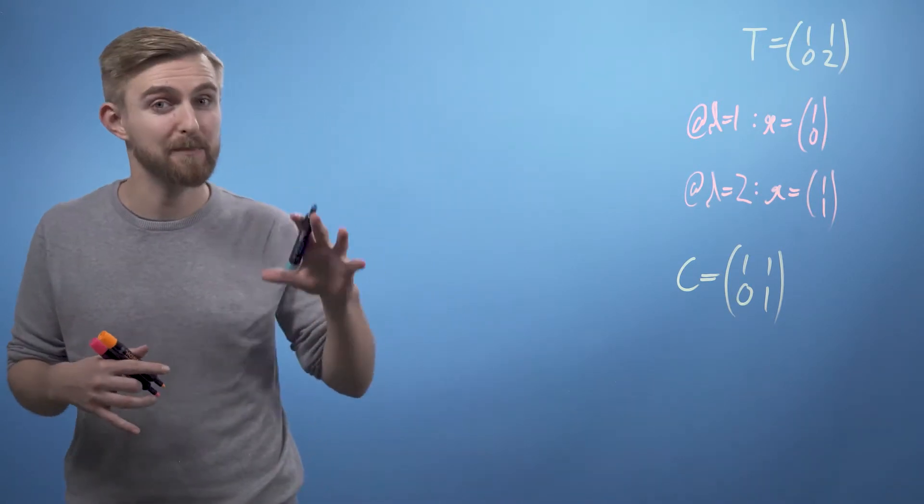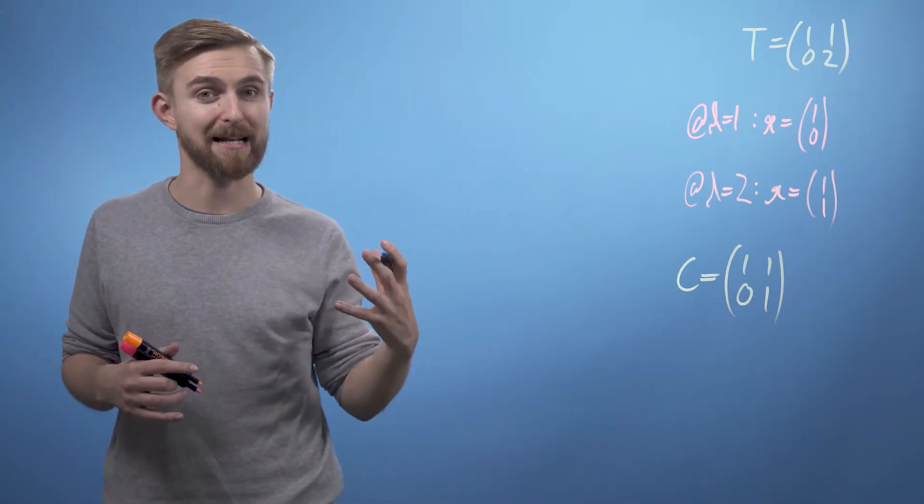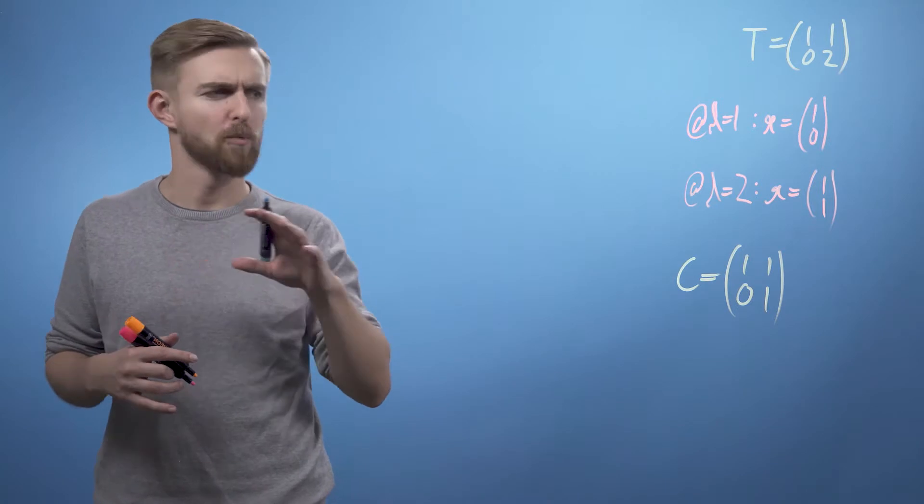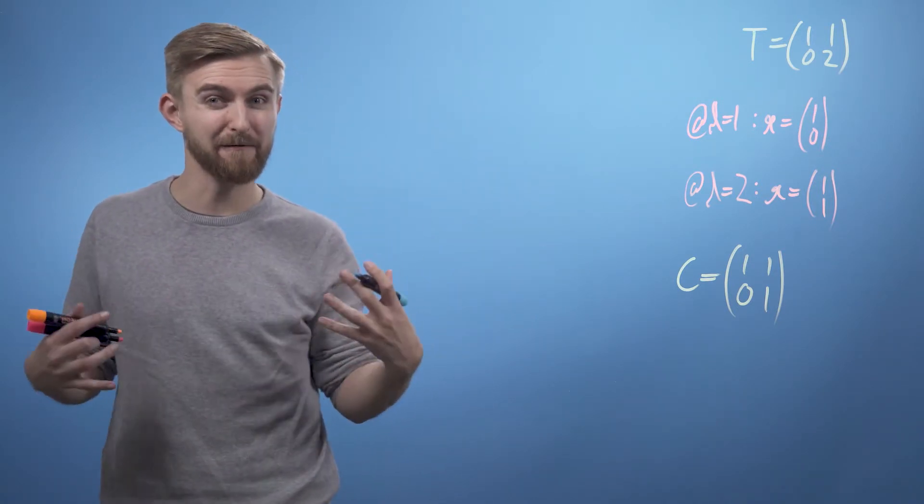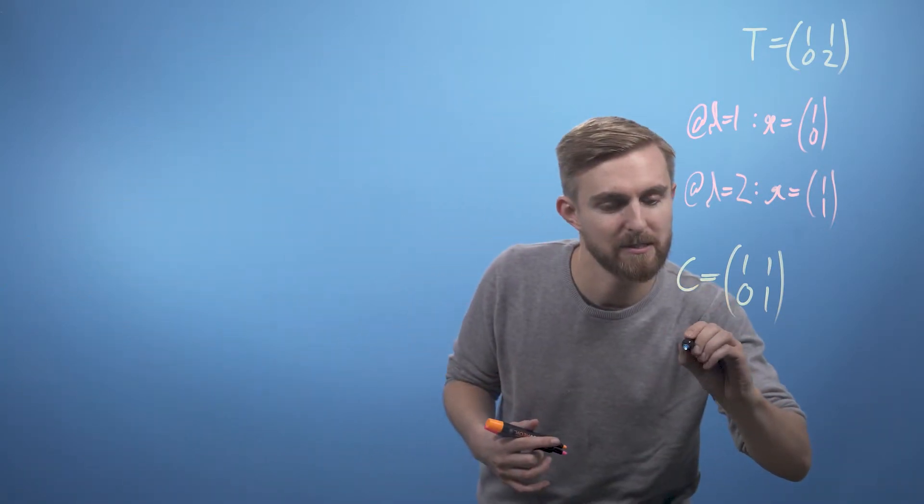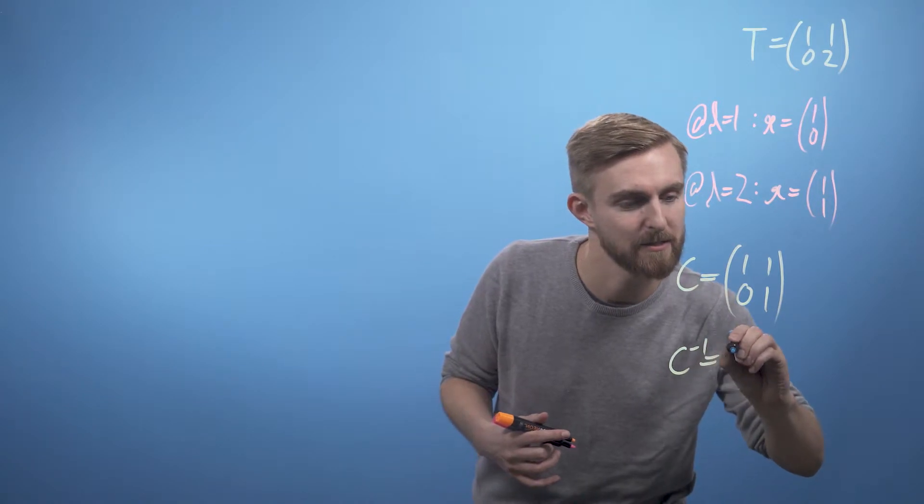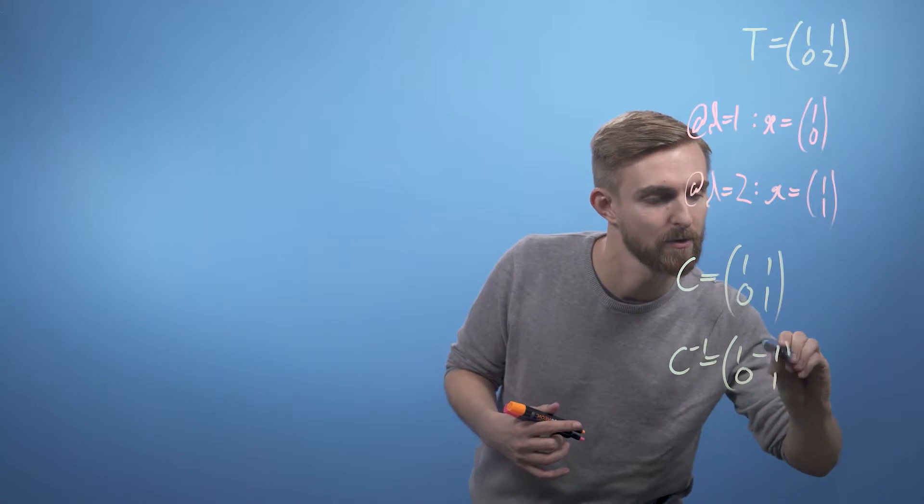However, because we've picked such a simple two-by-two example, it's possible just to write this inverse down directly by considering that C would just be a horizontal shear one step to the right, so C inverse must just be the same shift back to the left again. So C inverse is going to equal (1, -1; 0, 1). It's worth noting that despite how easy this was, I would still always feed this to the computer instead of risking making silly mistakes.